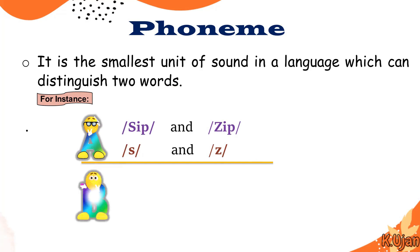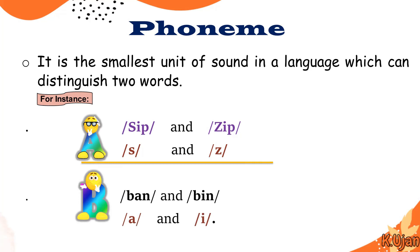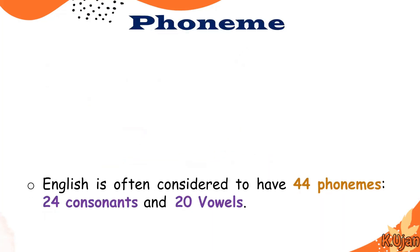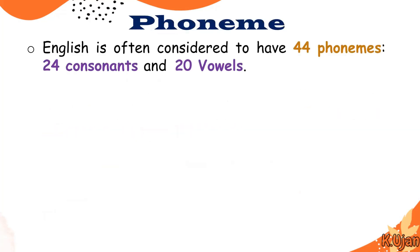Here is another example: the two words ben and bin only differ by /æ/ and /ɪ/. So /æ/ and /ɪ/ are actually the phonemes. Every word is a combination of the smallest units of sounds, i.e., phonemes — like we always learn: /æ/ for apple, /b/ for ba. English is often considered to have 44 phonemes: 24 consonants and 20 vowels.